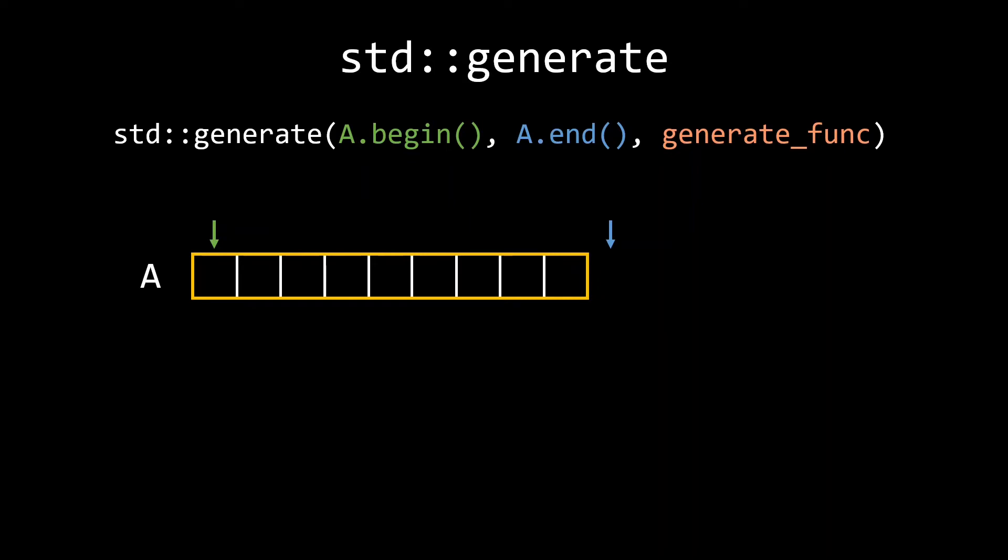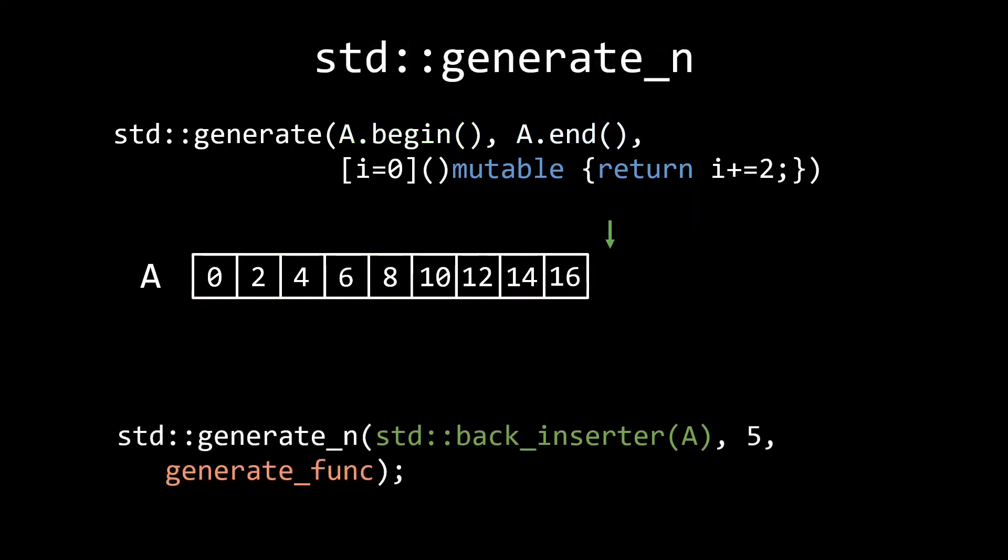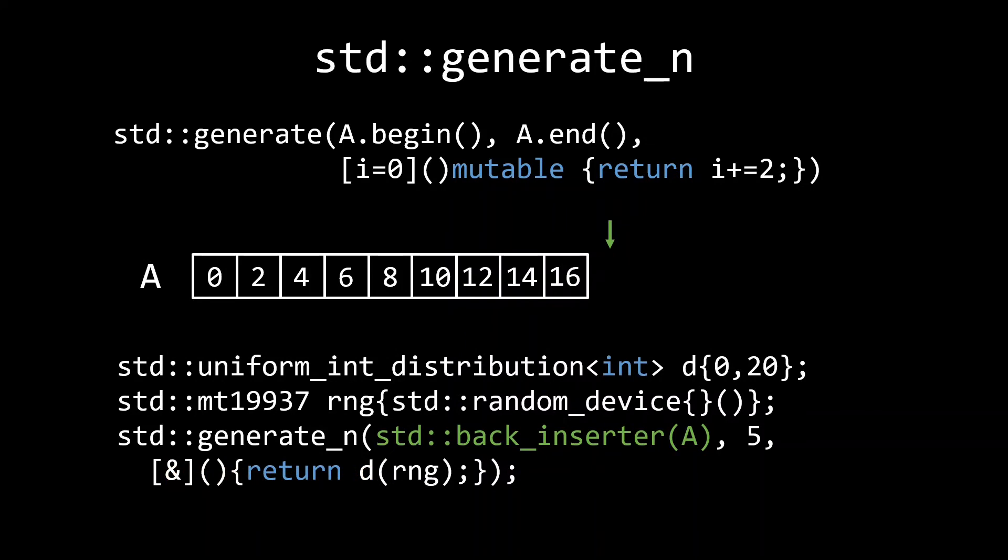You can, for example, use a mutable lambda to create a sequence of even numbers. Generate also has a generate_n version, which, just like fill_n, works by specifying a start iterator and a length. Here we use generate_n to add 5 random numbers to the end of our container.